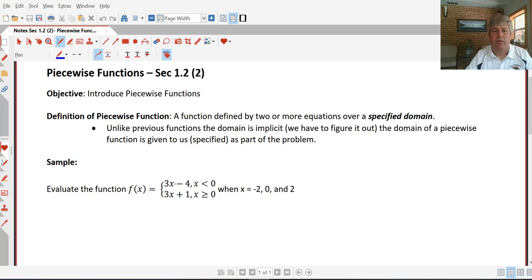Here's an example of a piecewise function. We have two linear equations, 3x minus 4, but this equation only applies to the x's that are less than 0. The other piece of the function is 3x plus 1 for x's that are greater than or equal to 0. So we're going to evaluate this function when x equals negative 2, 0, and 2.